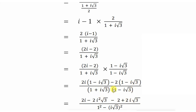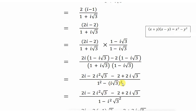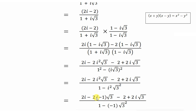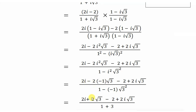For the denominator, (1 + i√3)(1 − i√3) is in the form (x + y)(x − y), so we use the identity x² − y² giving 1² − (i√3)². Splitting: (i√3)² = i² × (√3)². Substituting i² = −1, the denominator becomes 1 − (−1)(3) = 1 + 3 = 4. In the numerator, substituting i² = −1 gives 2i + 2√3 − 2 + 2i√3.